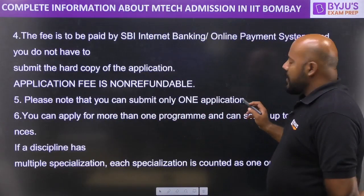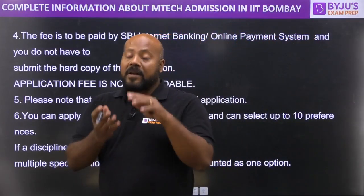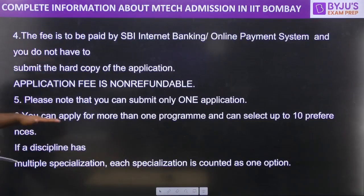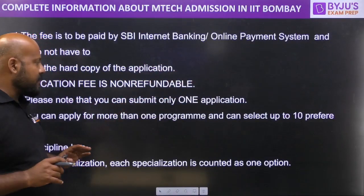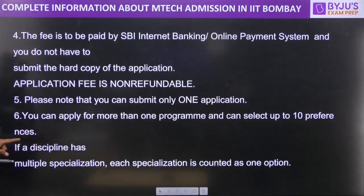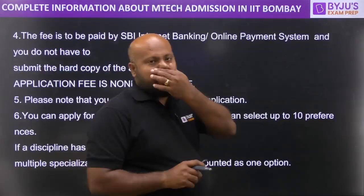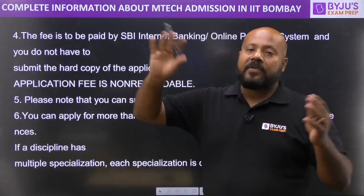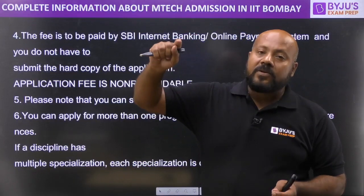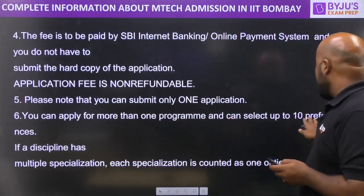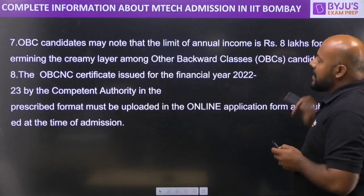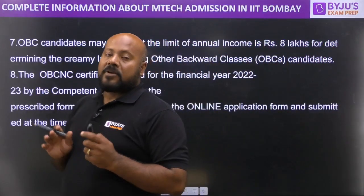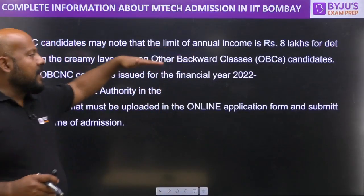You can submit only one application — you do not need to submit multiple applications. Within one application you can apply for more than one program, and you can select up to 10 preferences. If a discipline has multiple specializations, each specialization is counted as one option — so each one counts as one preference out of the total 10. The OBC candidates may note that the limit of annual income is Rs. 8 lakhs for determining the creamy layer criteria.